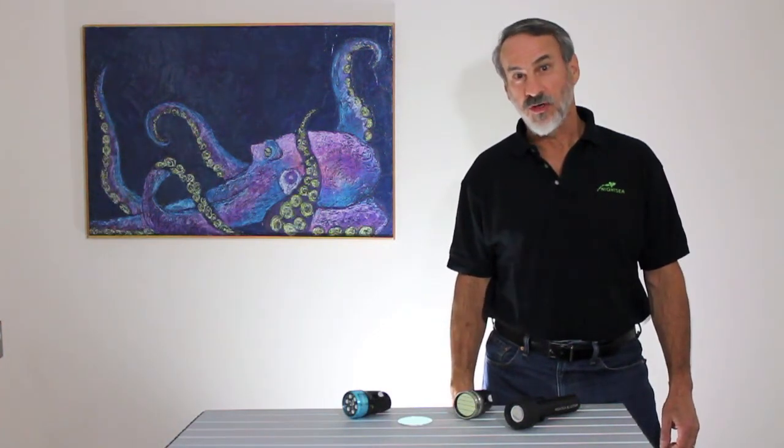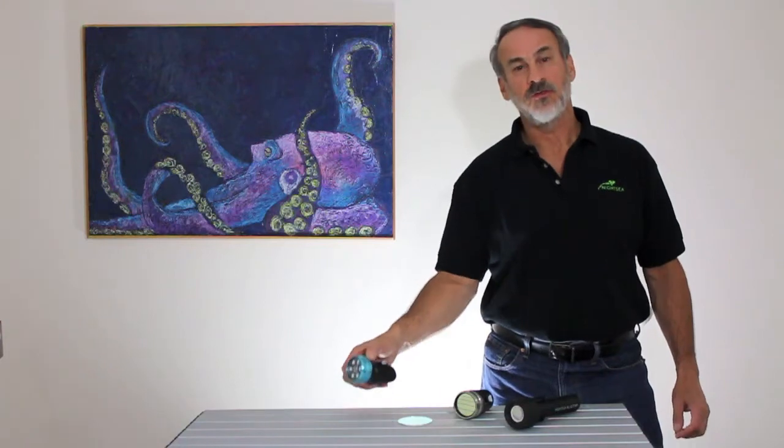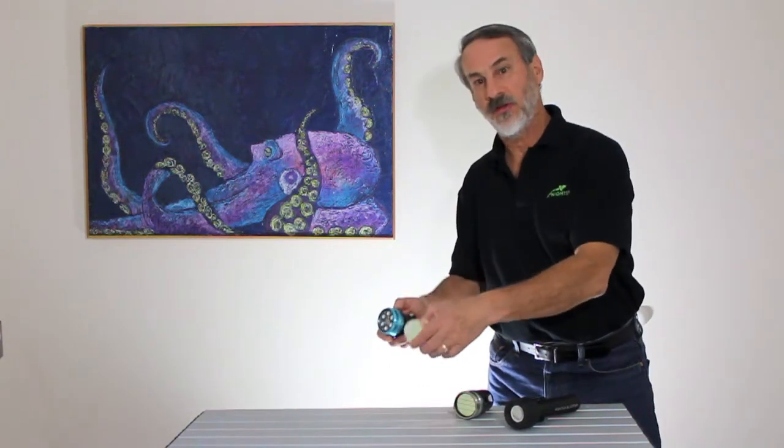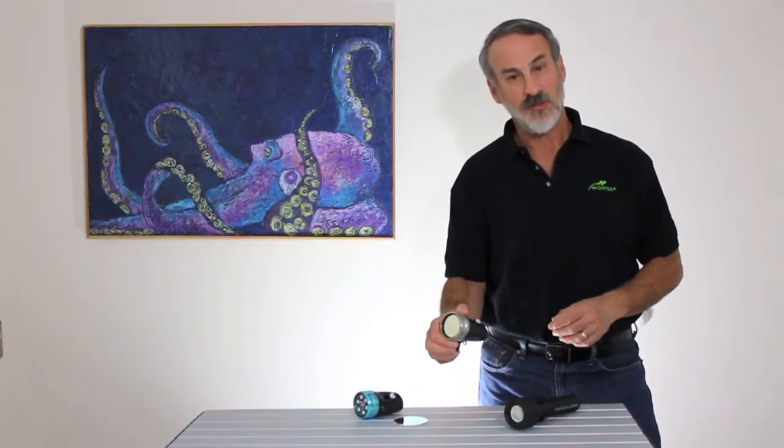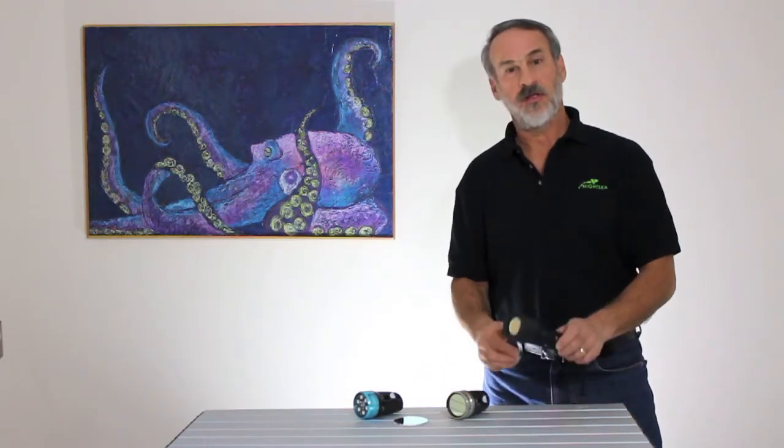Today we're going to look at three different lights. The Light in Motion Solar 1200 with a Night Sea excitation filter, the Light in Motion Solar Night Sea which is a dedicated blue light, and the Night Sea Blue Star.